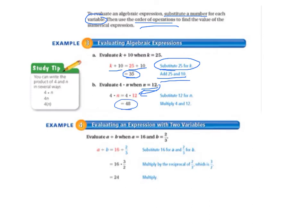Example 4, evaluating an expression with two variables. So it gets a little bit trickier here and you have to really pay attention to which variable is your A and which is B and where to put your numbers. So we have A divided by B equals, and we substitute in 16 for A and 2 thirds for B. So A divided by B equals 16 divided by 2 thirds. And we know that to multiply, we know to multiply by the reciprocal of 2 thirds, which is 3 halves. So 16 times 3 halves equals 24.